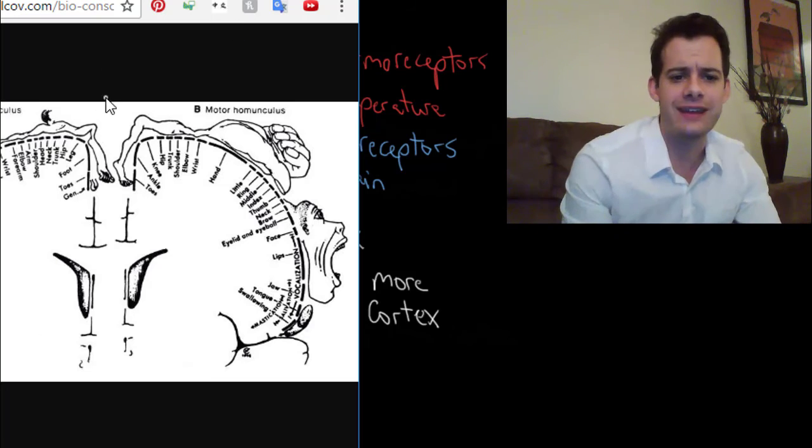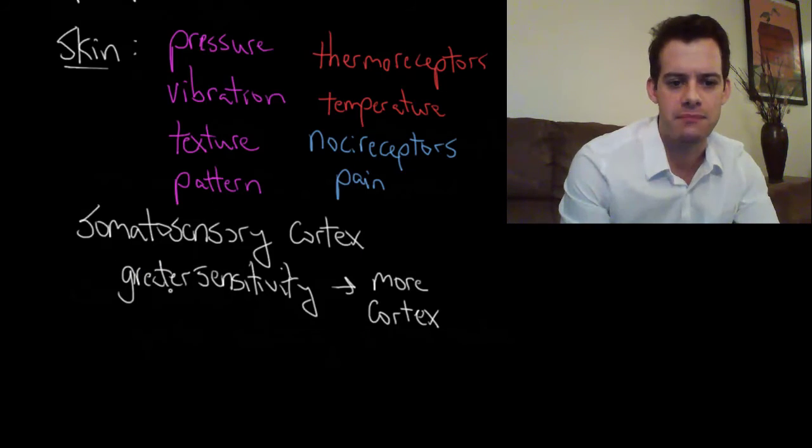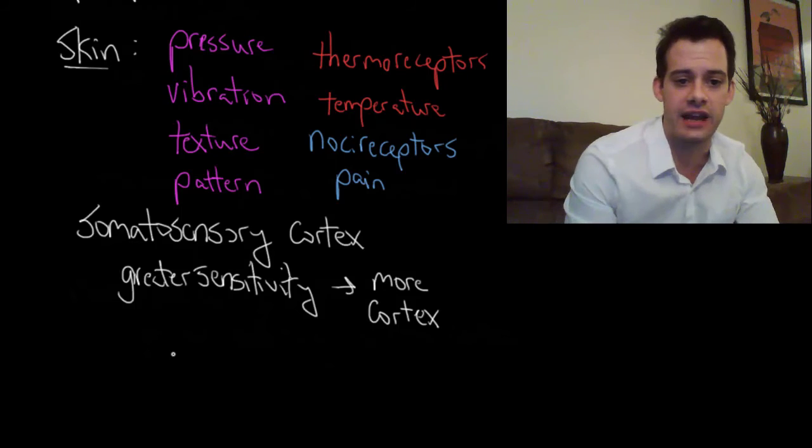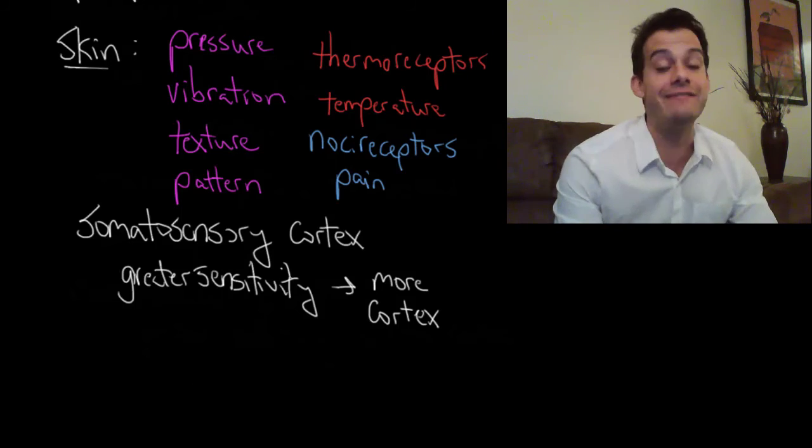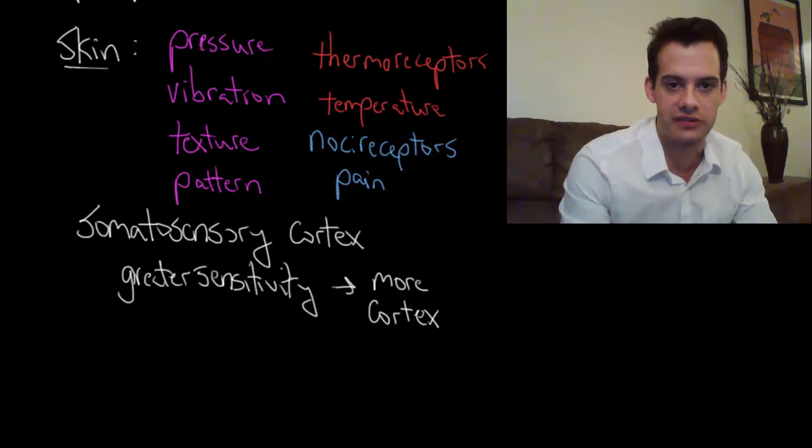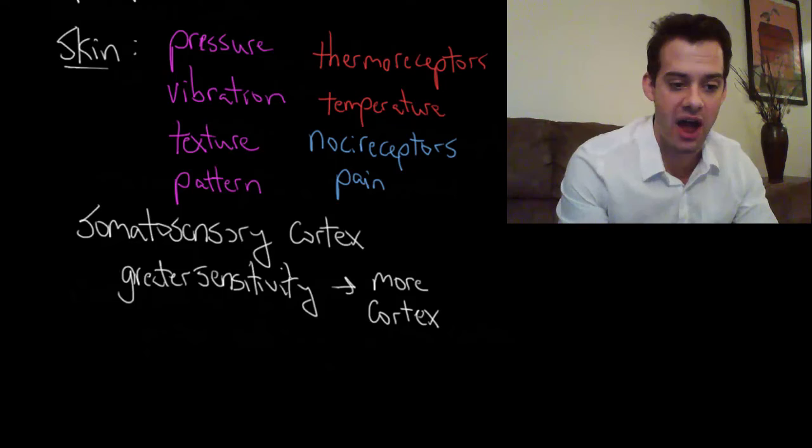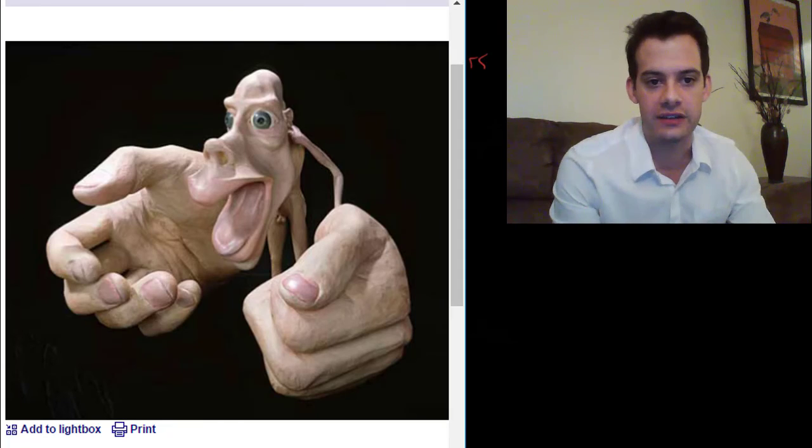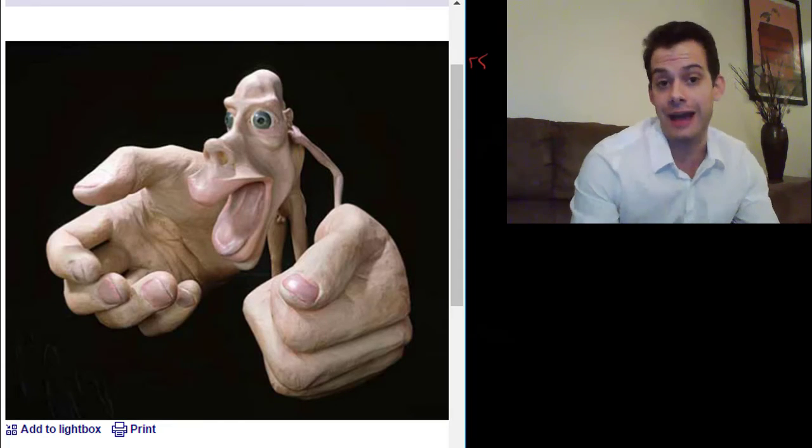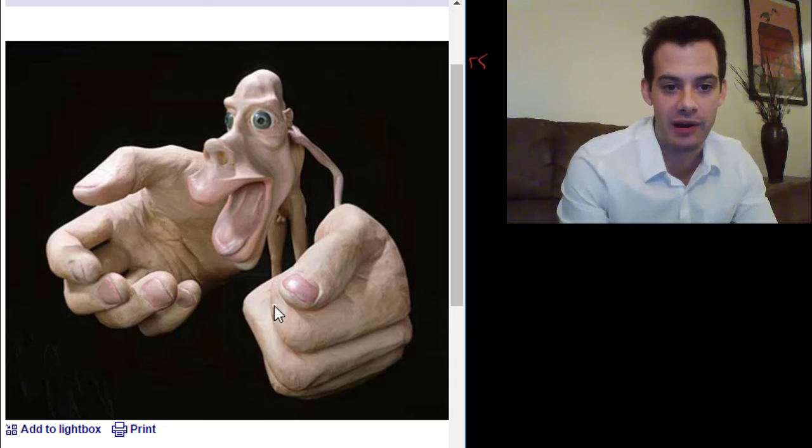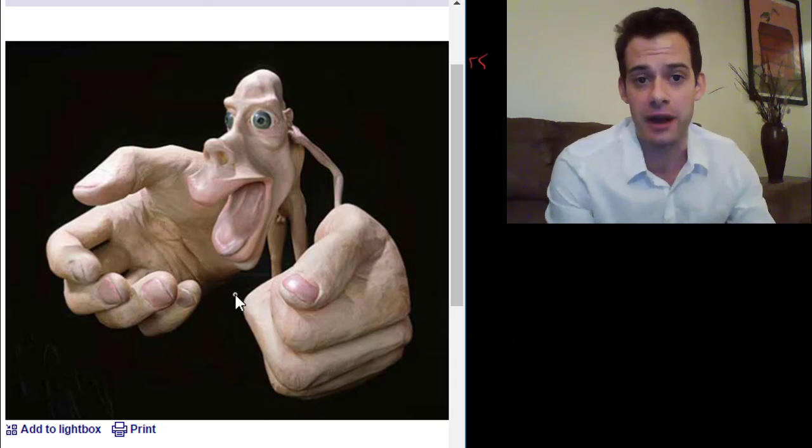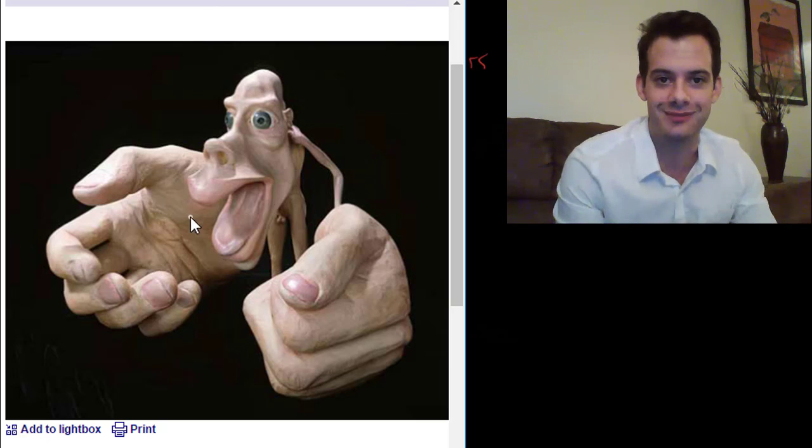And then we can take these maps here, these maps of the somatosensory cortex and the motor cortex and we could create a model of a person. So if you looked like your brain surface, in other words, if those sizes corresponded to your actual size of your body, then the motor cortex would look something like this. You'd have these massive hands and a very large mouth and then the rest of your body would be this sort of shriveled remnant of a body, really.